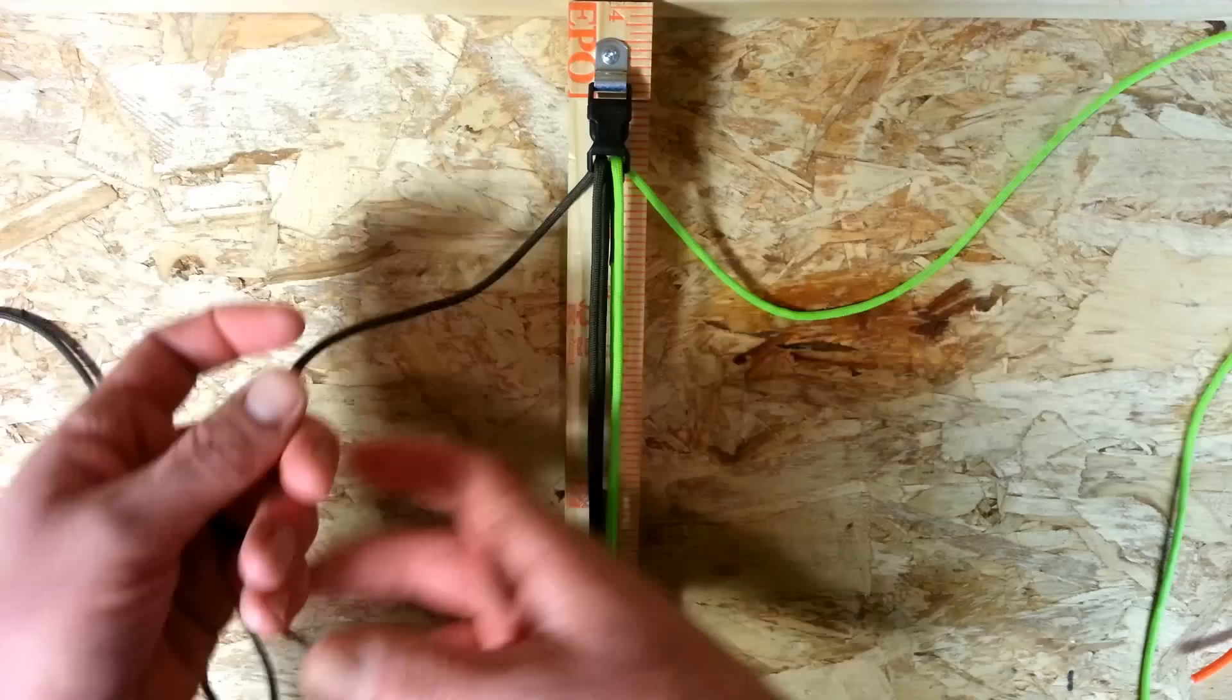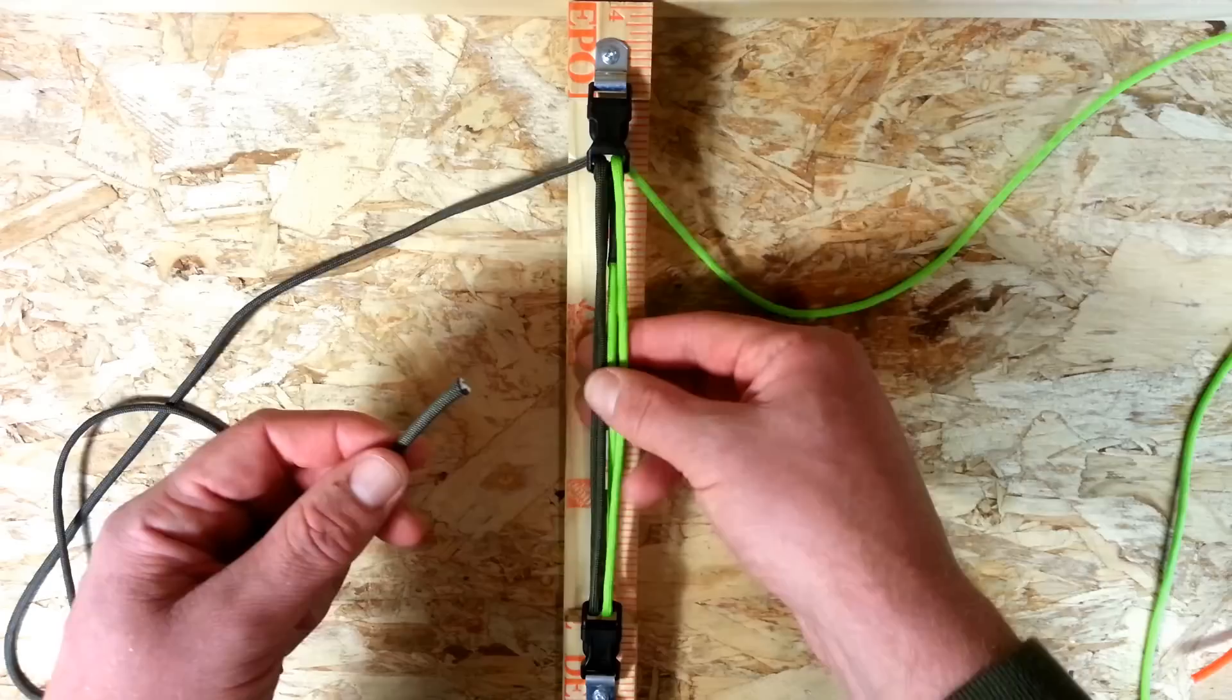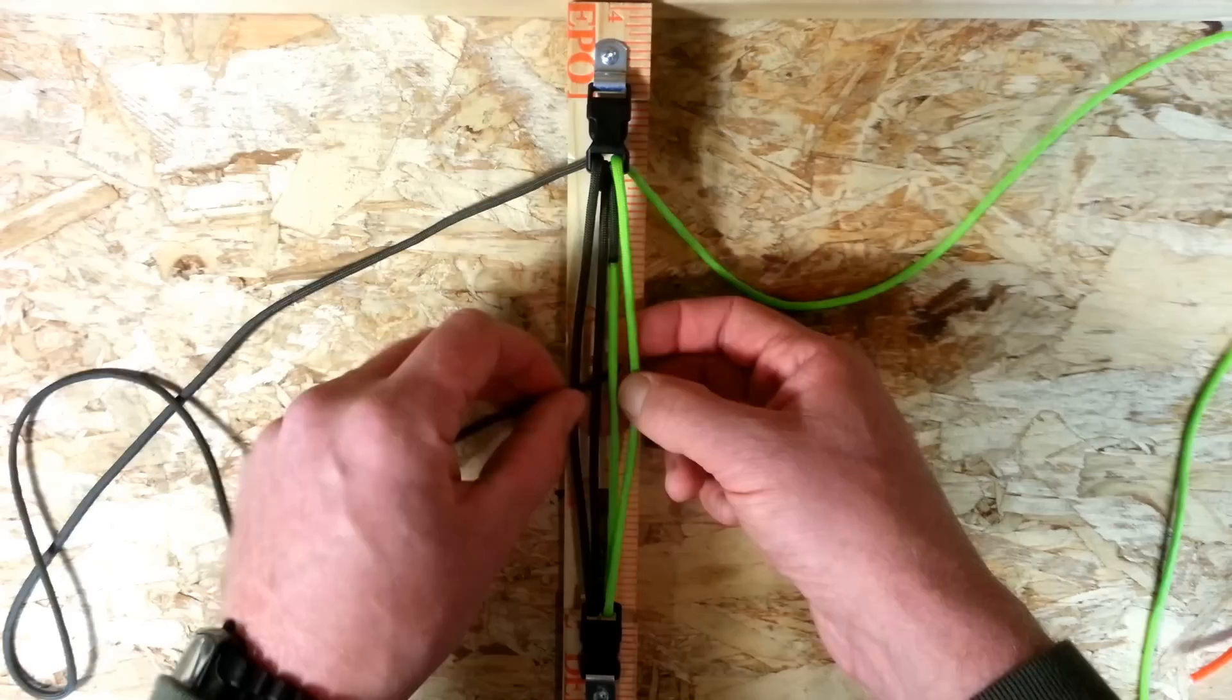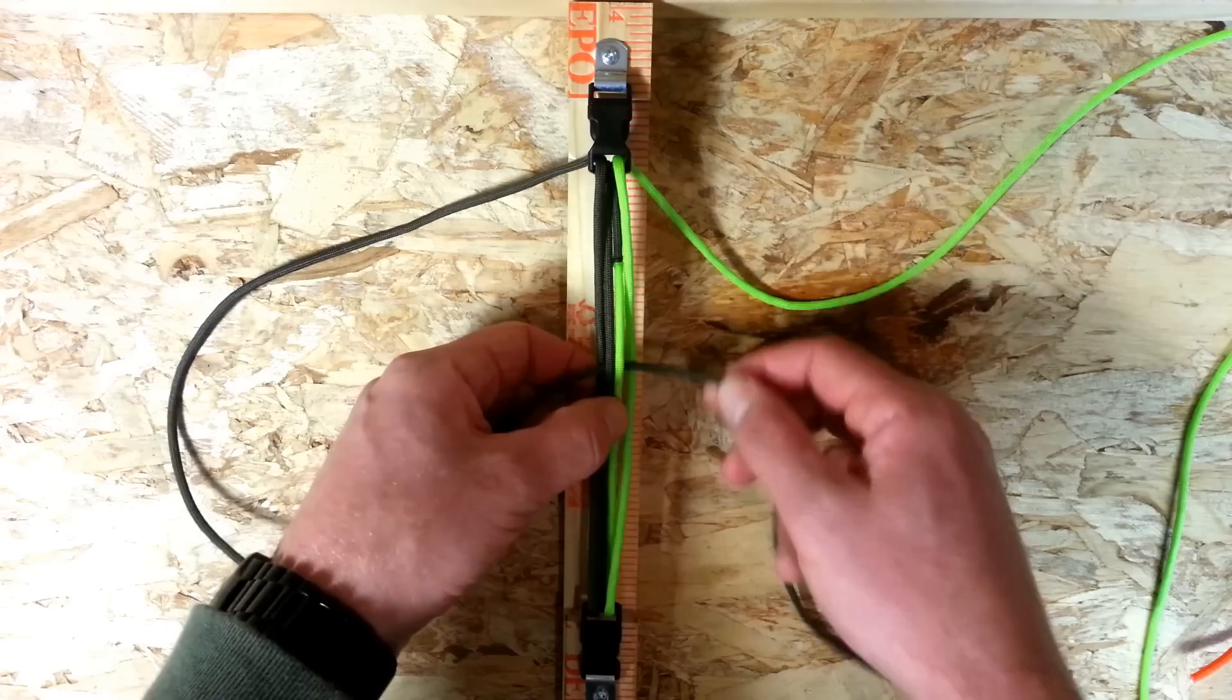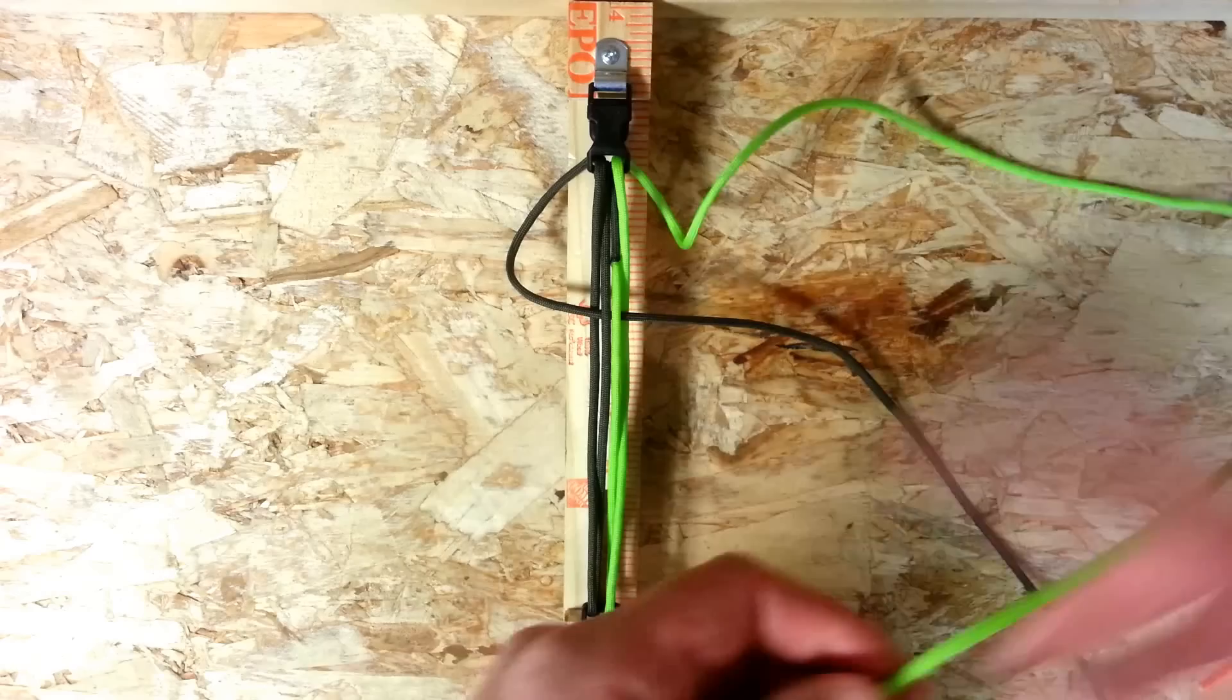So with this weave we're going to start from the left every time. So take the left hand end of your paracord and we're going to go over the first strand, under the two middle strands, back up and over the right. So we're going over, under, under, over. Leave yourself a bit of a loop there.